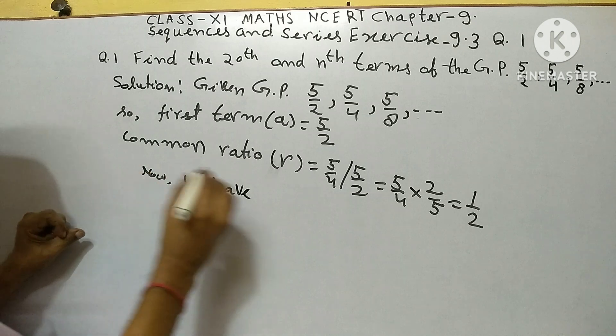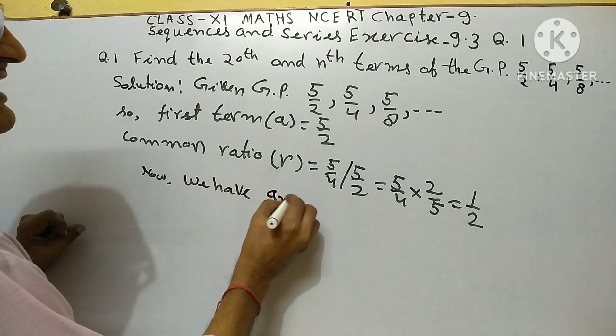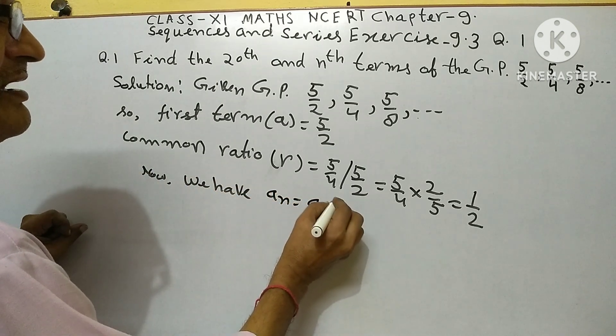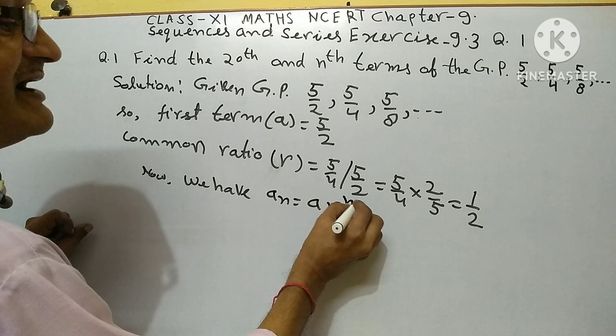Now we have a_n equals a times r to the power n minus 1.